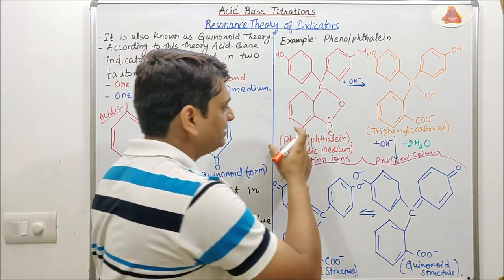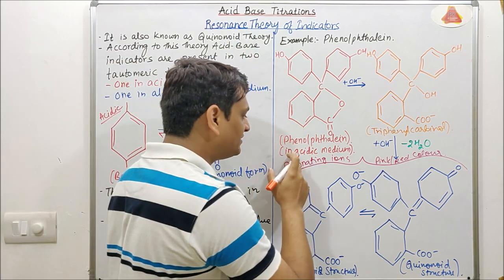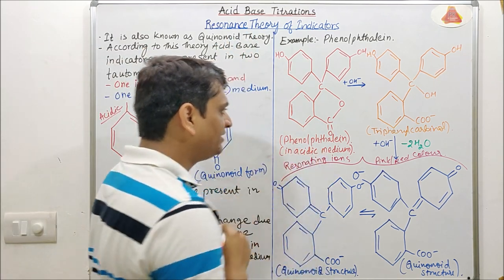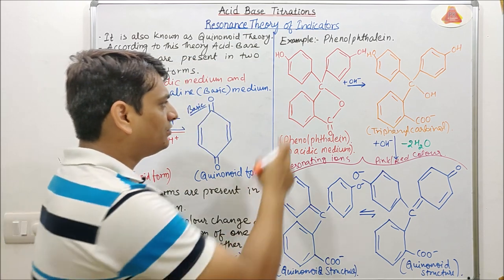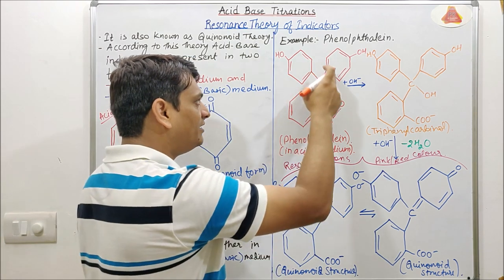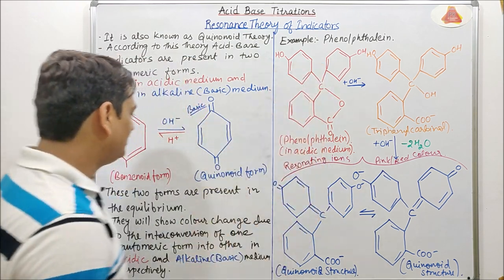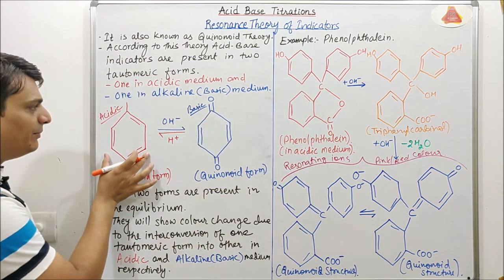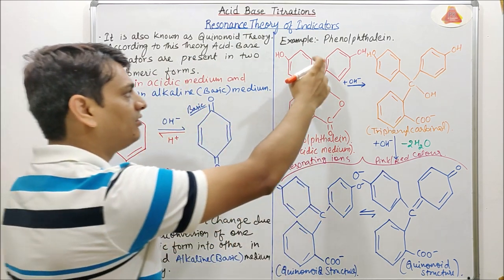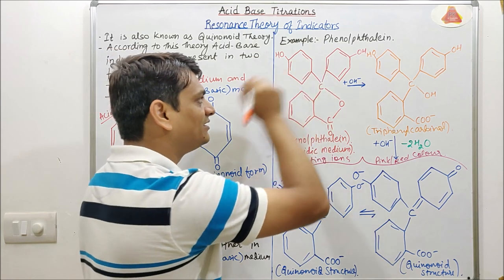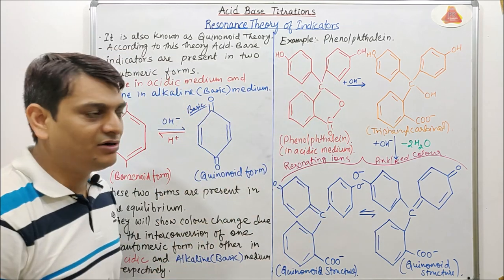Phenolphthalein is present in acidic medium, so benzenoid rings are present here. All rings are present in the form of benzenoids.